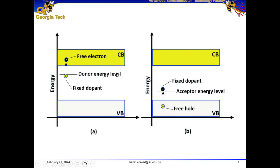In the case of N-type semiconductors, we know that we introduce a donor energy level close to the conduction band. Activation energy for N-type semiconductors is the amount of energy required to move an electron from the donor energy level to the conduction energy level — or the energy difference between the conduction band and the donor energy level.